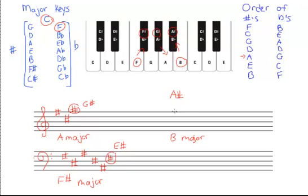So writing the key signature for B major would be Father Charles Goes Down and Ends Battle — five sharps. The method is just the reverse: instead of taking the last sharp A sharp and going up a semitone to B, when given B major we go down a semitone to find our last sharp, then determine which sharps are in the key signature.